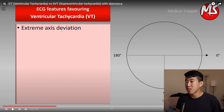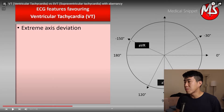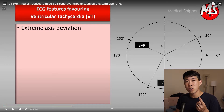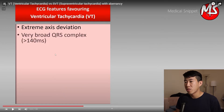Another criterion is extreme axis deviation — specifically a northwest axis. That's when the axis is pointed to the northwest direction of the heart, so you're looking for a negative QRS in leads I and aVL, and a positive QRS complex in aVR.